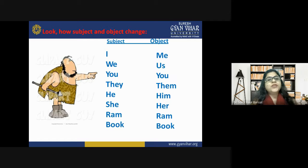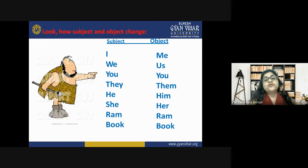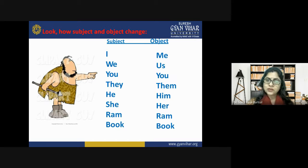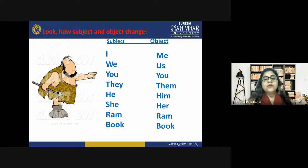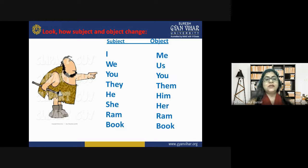Remember how subject and object pronouns change from active to passive: I → me, we → us, you → you (unchanged), they → them, he → him, she → her. Proper nouns and names (like Ram) remain unchanged in any case.